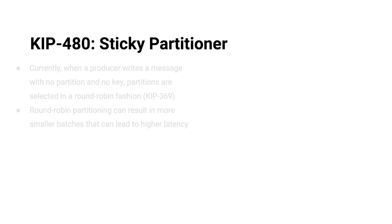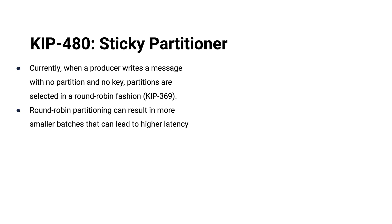Next is KIP 480, the sticky partitioner. Imagine you've got a producer that's producing with a null key — who would do such a thing, right? And not only is there no key, but also in the produce operation it's not using any of the APIs for specifying what partition to write to. So what do you get? You get round-robin behavior at that point — the produce operation has no opinion about to what partition these messages should be written, and so you get round-robining between the partitions, which is fine and fair and great.